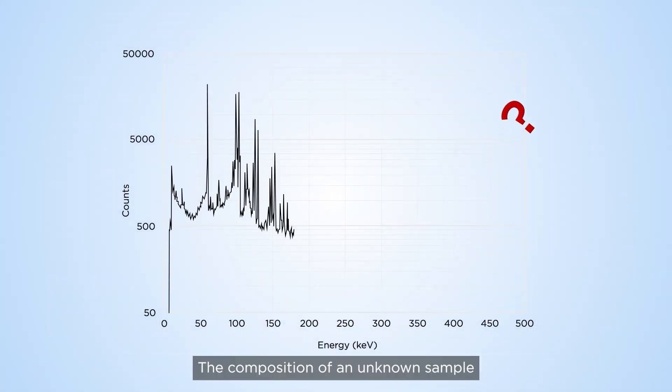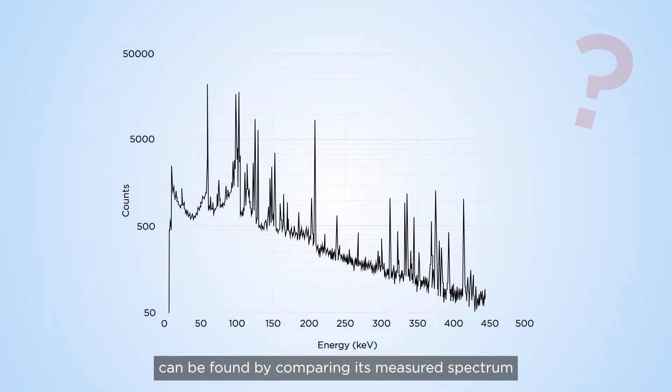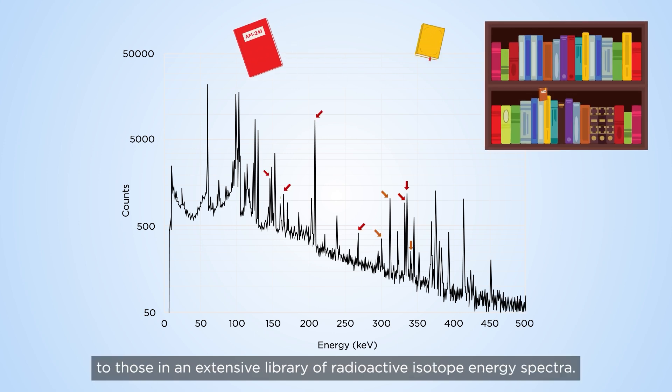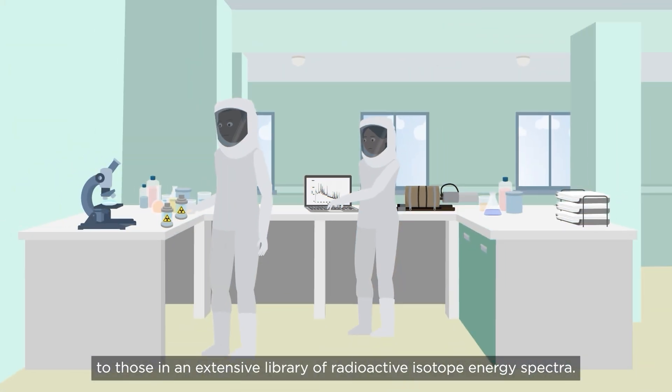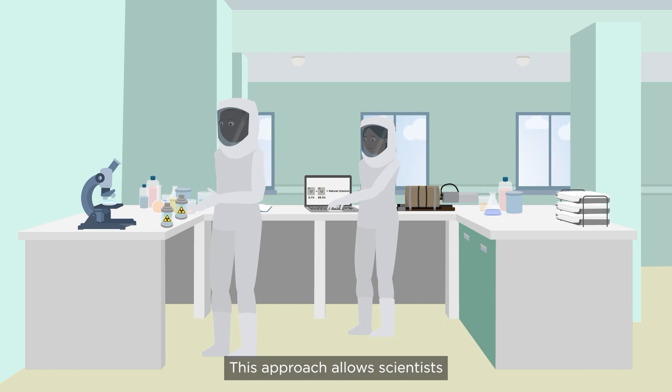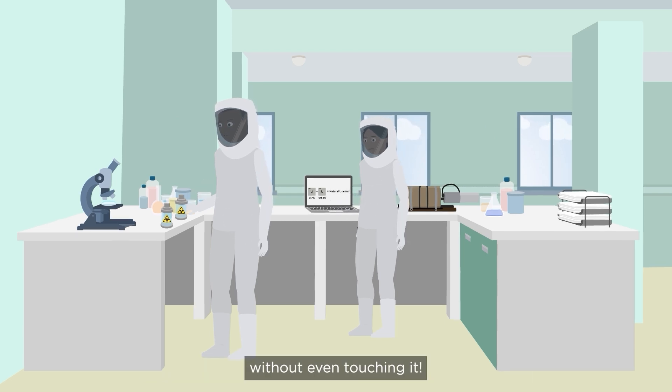The composition of an unknown sample can be found by comparing its measured spectrum to those in an extensive library of radioactive isotope energy spectra. This approach allows scientists to determine the composition of a radioactive material without even touching it.